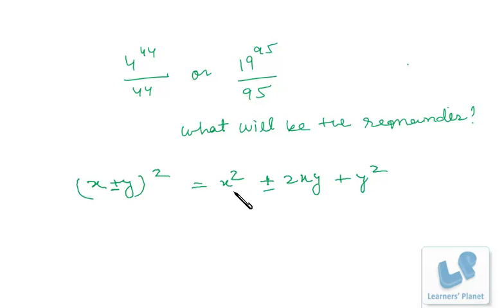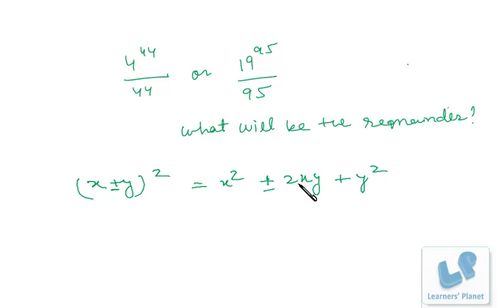If the entire expansion of (x + y)^2 is divided by x, what will be the remainder? If I divide x squared by x the remainder is 0, since x is a factor. The middle term also gives remainder 0. Only y squared, when divided by x, gives remainder y squared.